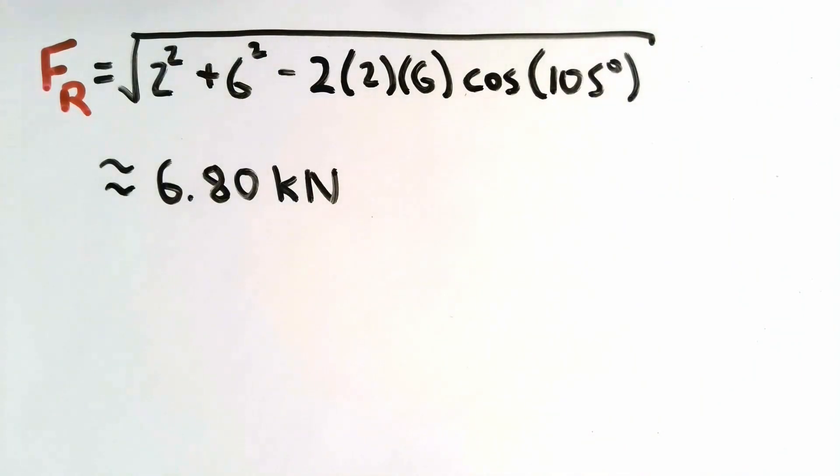Solving this to about three significant units will give us a resultant force of 6.80 kilonewtons. So we found the magnitude of the resultant force. But that was really the easy part of this problem. Now our next step is to find the angle at which that resultant force acts on, measured clockwise from the horizontal.